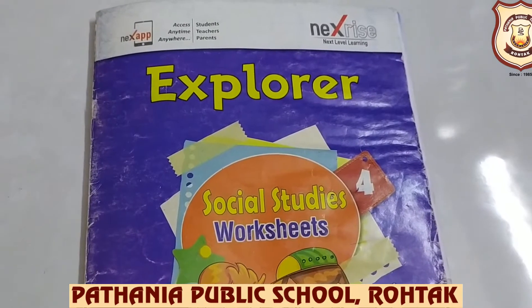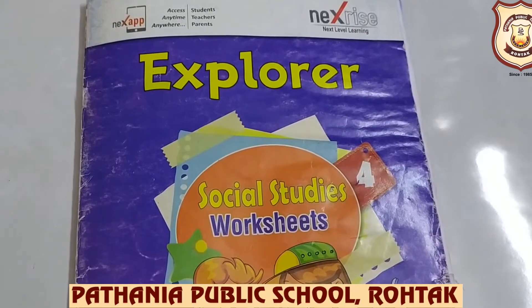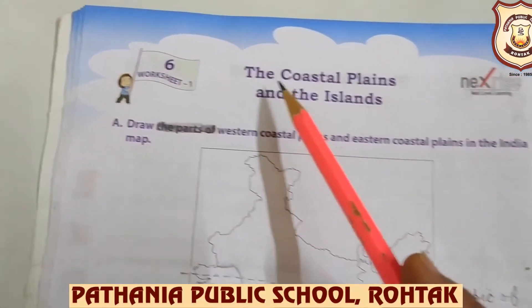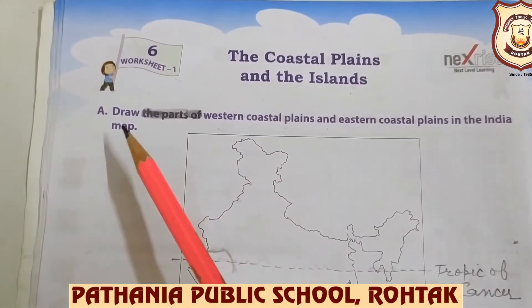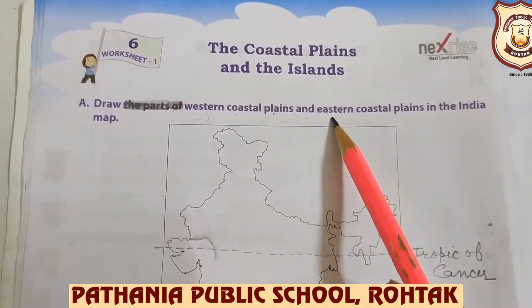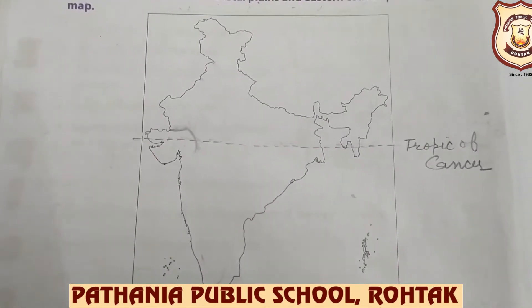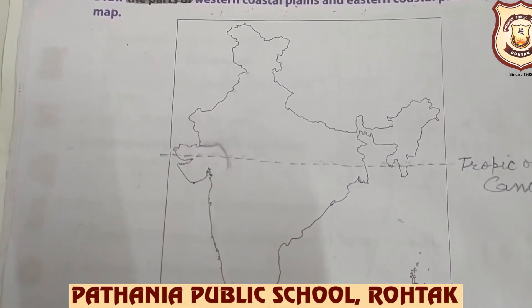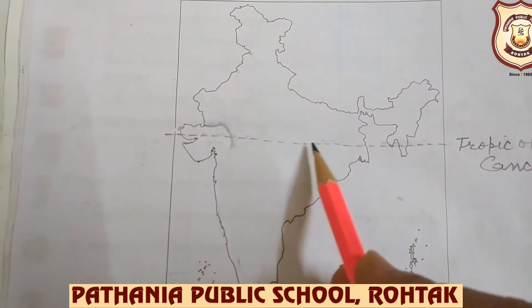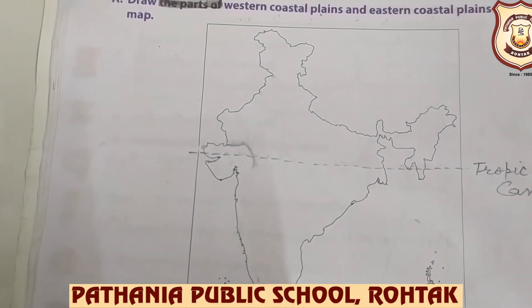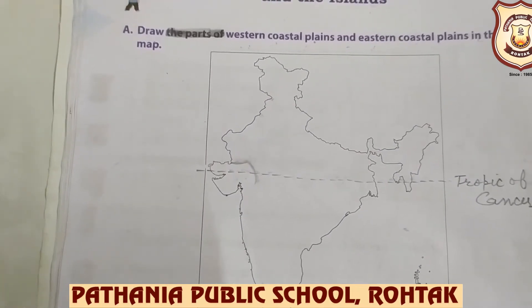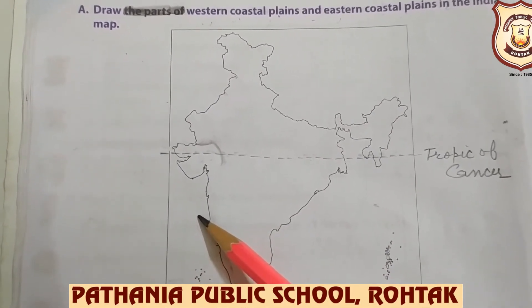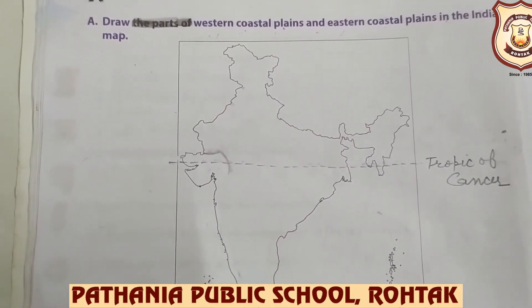Now children, take out your explorer book and we will do Worksheet Number 1 of Chapter 6 — 'The Coastal Plains and the Islands.' Part A: Draw western coastal plains and eastern coastal plains on the India map. The area of land next to or close to the sea is coastal plains.